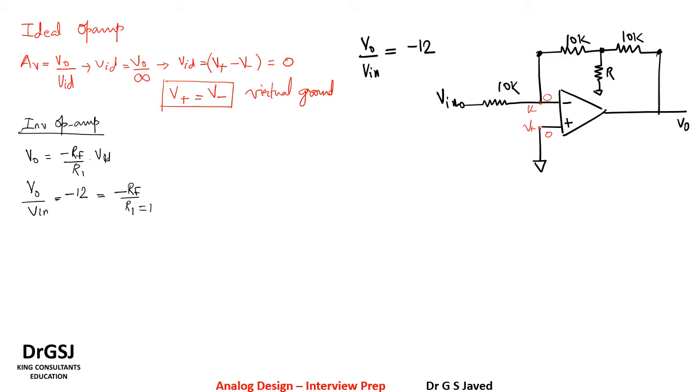So that can be given as V naught by V in equal to minus 12, that is equal to minus R_f by R_1. Now in this case R_1 is equal to 10 kilo ohm, so the R_f which is the effective value has a value equal to 120 kilo ohm.